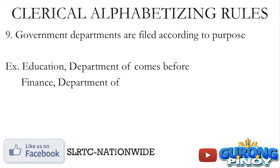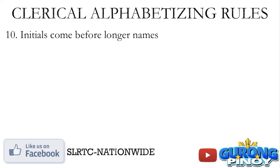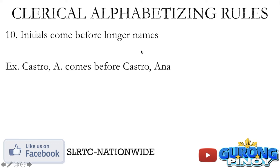Clerical reasoning is part of the sub-professional level of civil service examination, and sometimes this may also come out in some entrance exams. Rule number ten: initials come before longer names. For example, you have Castro A and Castro Ana. Pag initial lang po — pareho silang nagsisimula sa letter A — but yung initial po would be filed before the longer name Ana.